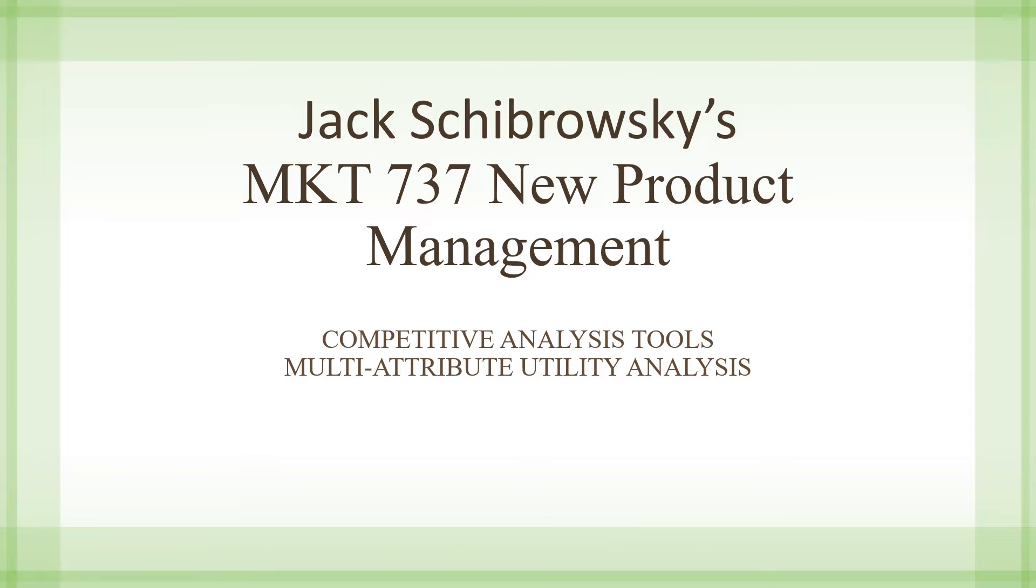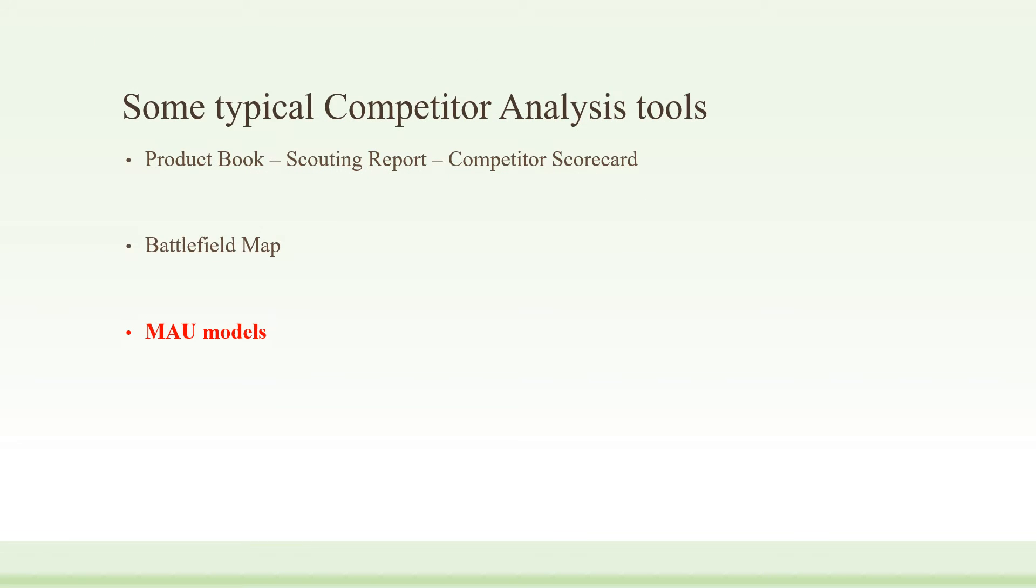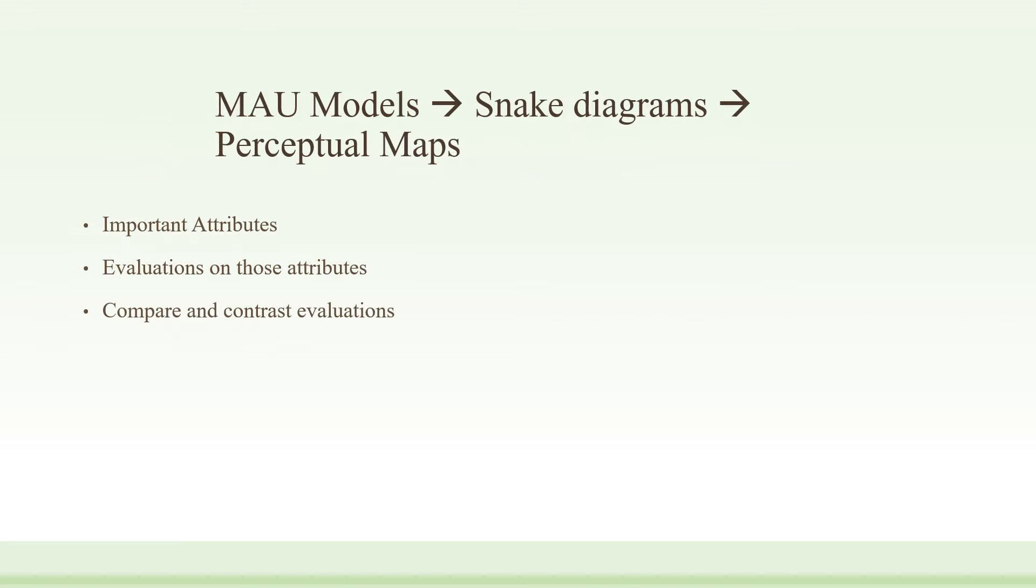Let's continue our discussion on competitive analysis tools by talking about multi-attribute utility analysis and modeling. We've discussed product books and battlefield maps. Now let's talk about multi-attribute utility models. MAU models also include snake diagrams and perceptual maps, and we'll talk about all of those along the line.